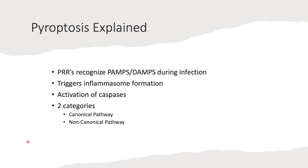Once PRRs recognize PAMPs or DAMPs, this triggers inflammasome formation. Recognition during infection leads to inflammasome formation, which then activates caspases to initiate pyroptosis. There are two main pathways: the canonical pathway, which uses caspase-1, and the non-canonical pathway, which uses other caspases.